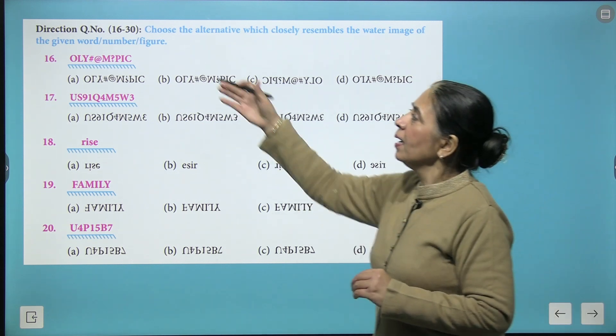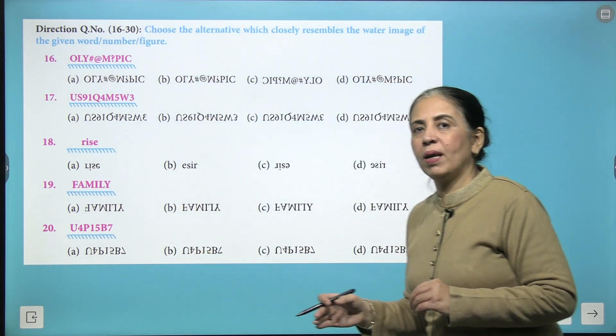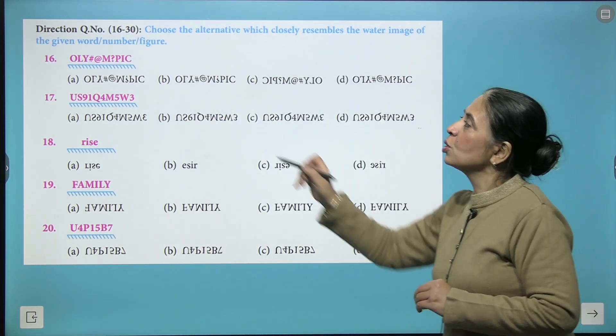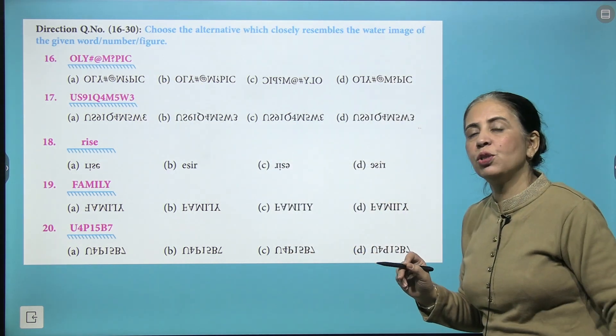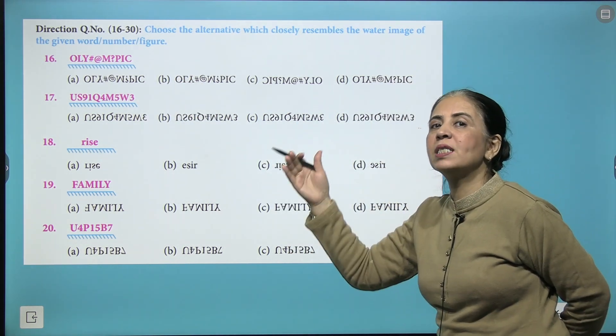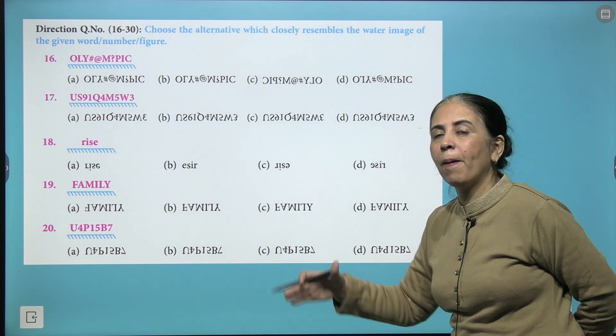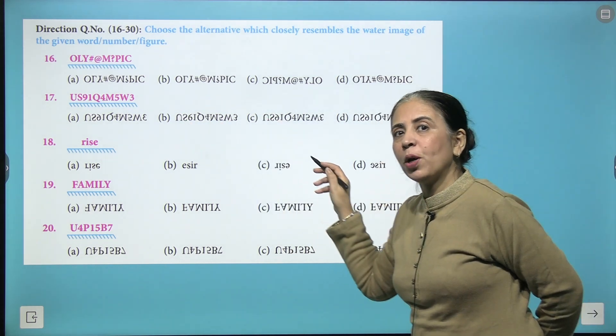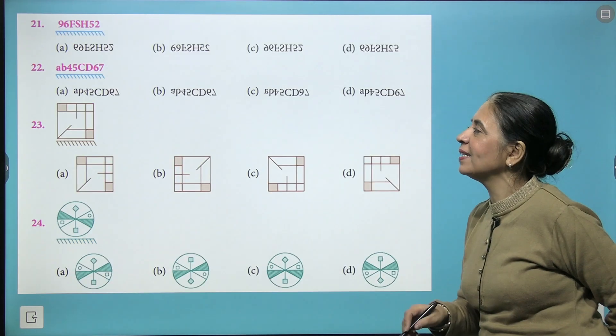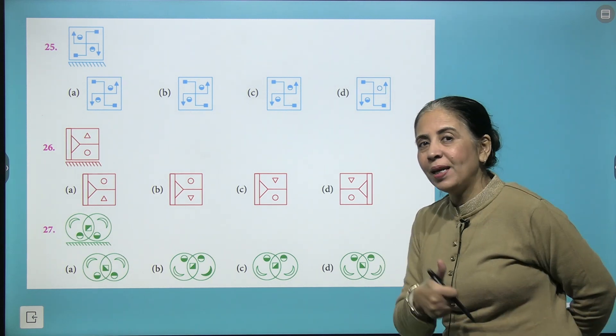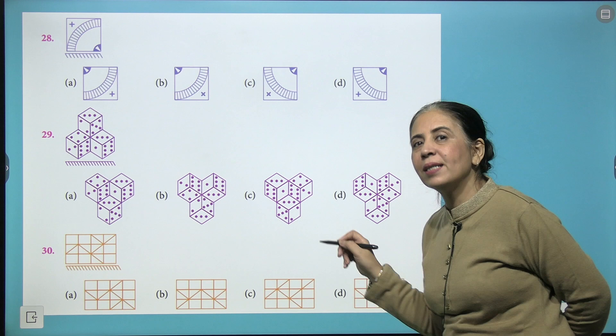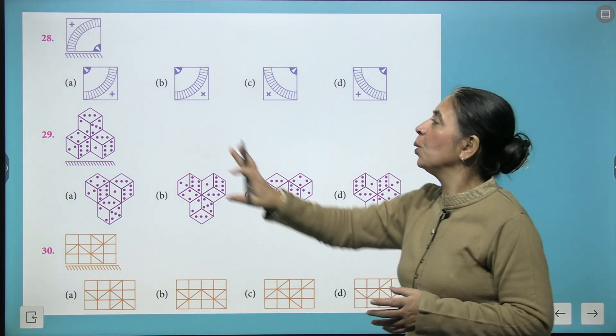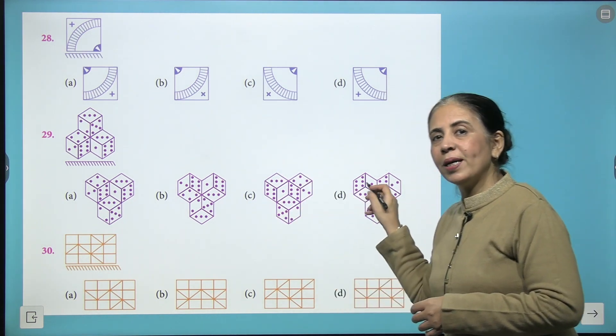Next we have a few questions related to water image. So numbers, alphabets, and special characters are given to you. You have to see the image formed and choose which one of these will be the correct answer. And gradually it is going to make your brain more sharper, more accurate. So I know when you will be able to do all these questions correctly.